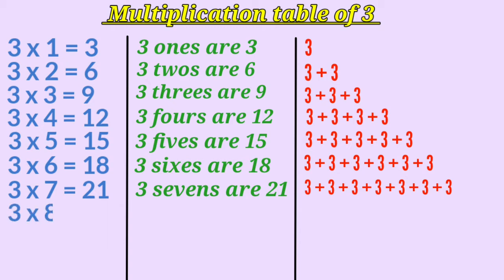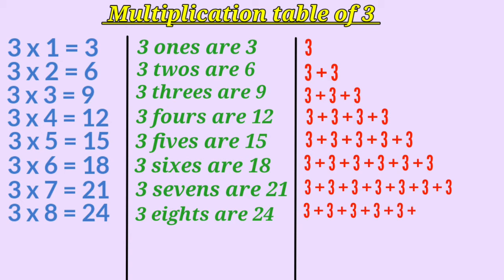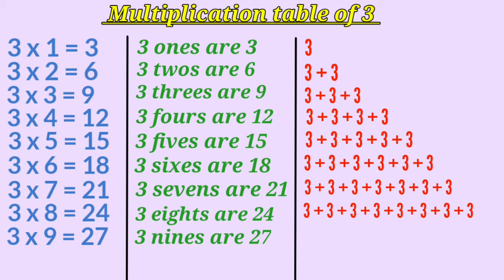3 multiplied by 8 is 24, or 3 eights are 24. Here we are adding 3 eight times. 3 multiplied by 9 is 27, or 3 nines are 27. How many times are we adding 3 here? That's right, we are adding 3 nine times.